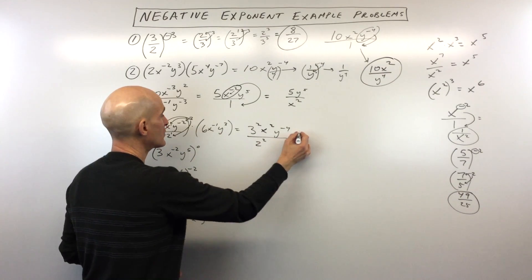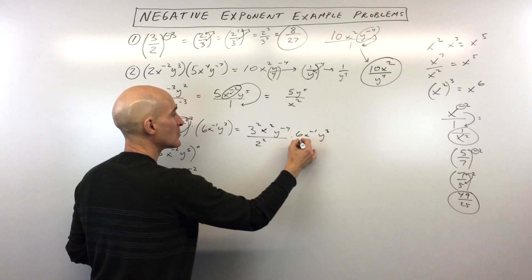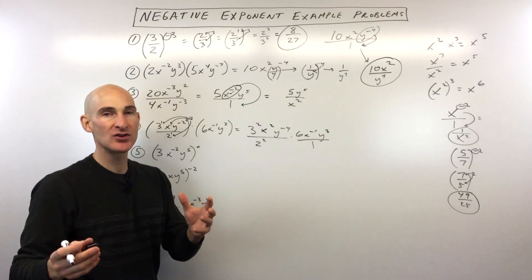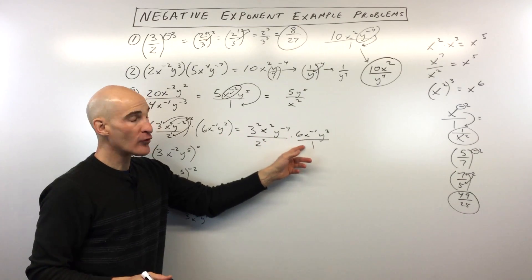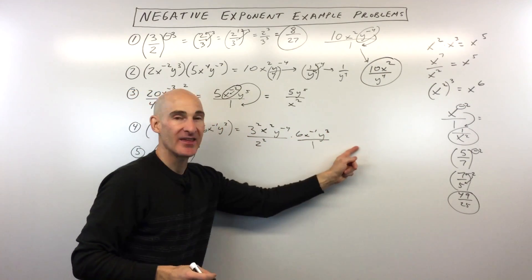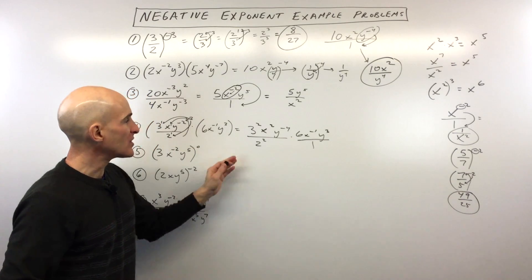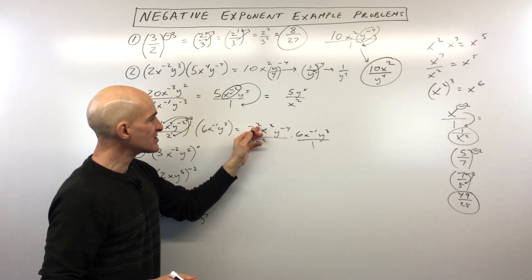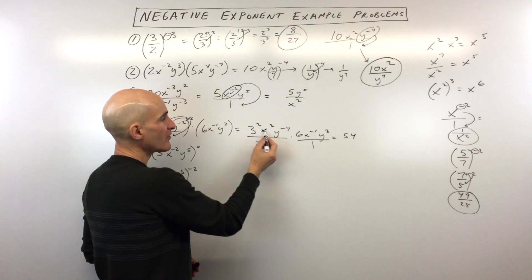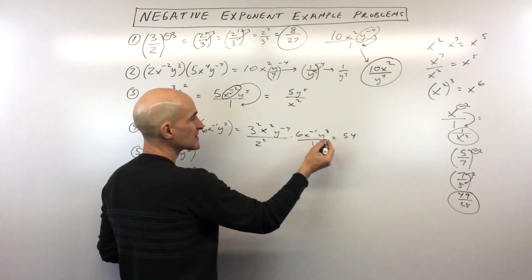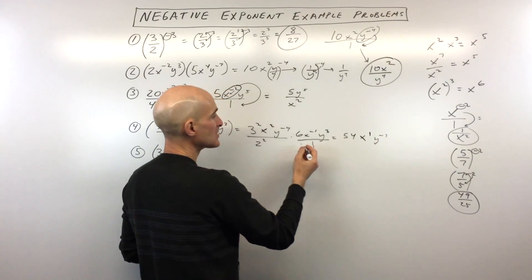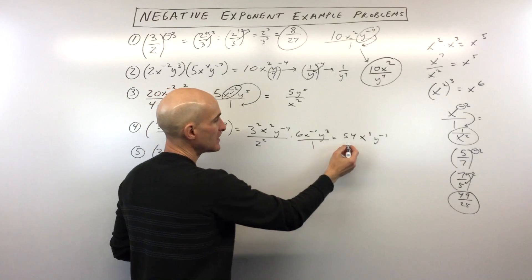We'll carry over 6x to the negative 1, y to the 3rd over 1. If you have a quantity that's not a fraction, you can always put it over 1 — it lines up the numerators and denominators so you can multiply across horizontally. So 3 squared is 9, times 6 equals 54. Over here, x squared times x to the negative 1: when you multiply, you add the exponents. So 2 plus negative 1 is 1. And y to the negative 4th times y cubed gives y to the negative 1 because we're adding. 2 squared is 4.